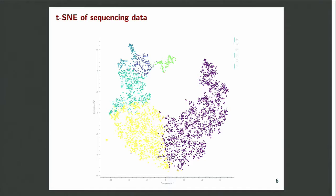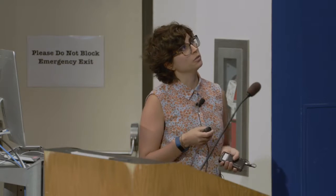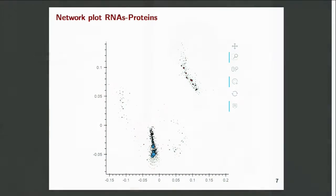The second example I would like to show is a TSNE plot, generated using the Bokeh library. With this, you can actually see if there are similarities between different RNAs. This is an example using sequencing data, but it can also be used for protein data. We also tried to find a way to connect the two datasets — the mass spectrometry dataset and the sequencing data — and we came up with a network plot based on correlation coefficient. This helped us to see if there are interactions between RNAs and specific proteins.